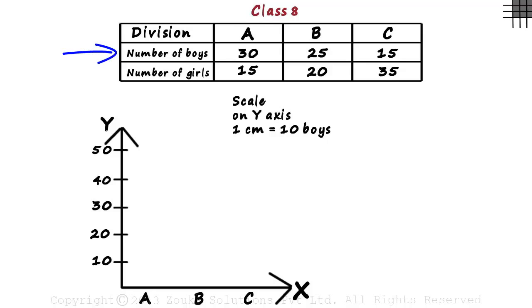Now look at this row. The number of boys in Division A is 30. Based on the scale, we draw a bar of length 3 centimeters for boys of Division A.